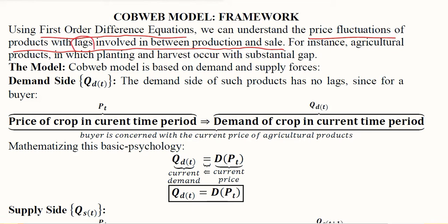When there are gaps between the production and the sale, we have a situation where a difference equation is working in the background. For example, agricultural products in which planting and harvesting occur with a substantial gap. Whenever we sow a seed, it takes some time to grow into a tree or plant and then give us the fruit. So there is a certain gap between the plantation and the harvest, and that is where the difference equation comes into play.